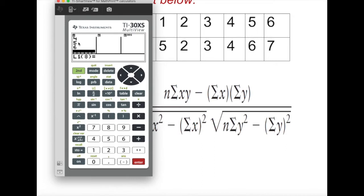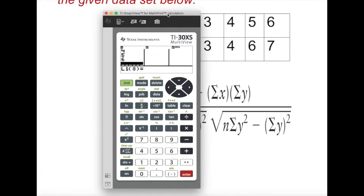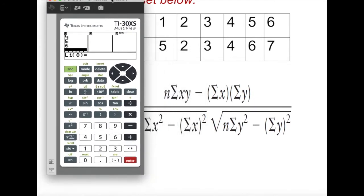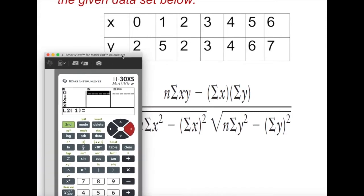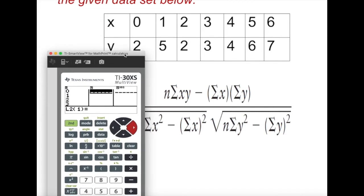Now if I go to the y, my y value dependent variable, I'm going to store to the right side. I'm going to move to the right on L2. Let's take a look here - what is my y? When x is 0, y is 2.